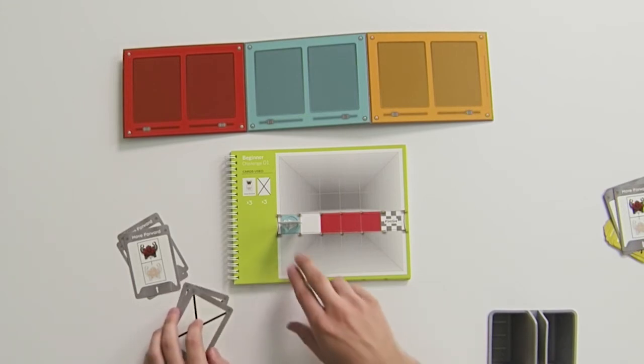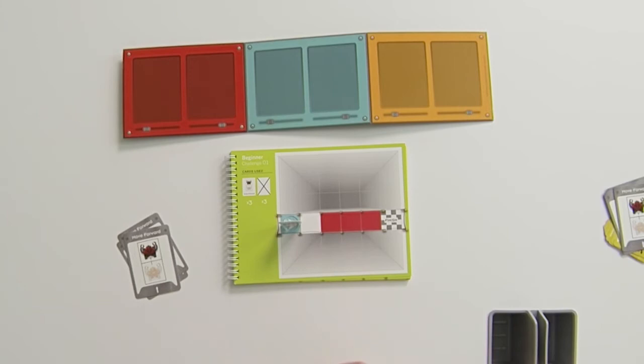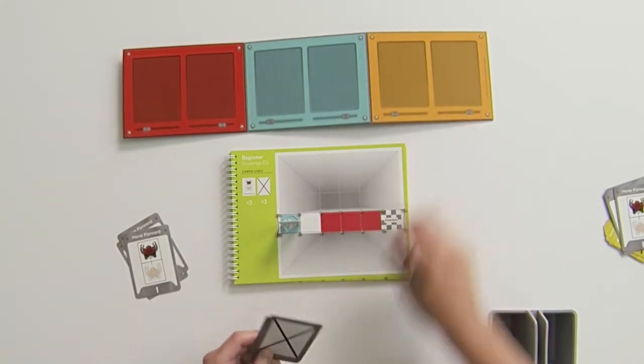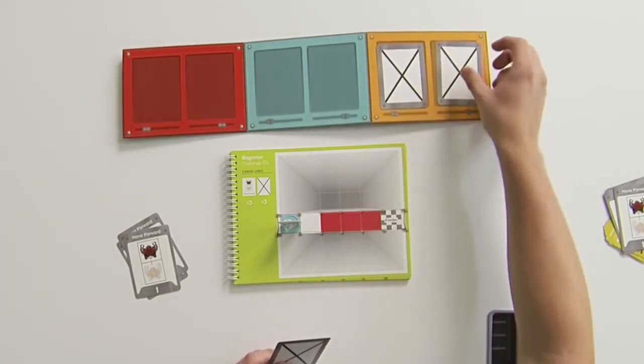We also notice that there are no orange spaces on our game board. That means there's no instructions to give the robot on our orange control panel and we can put two of our three X's here.